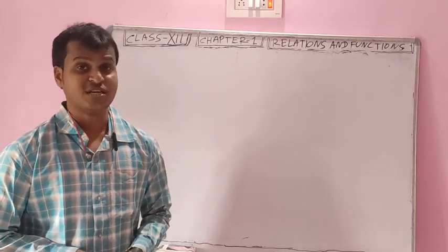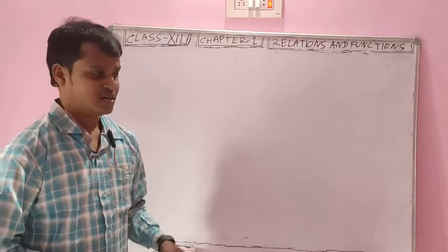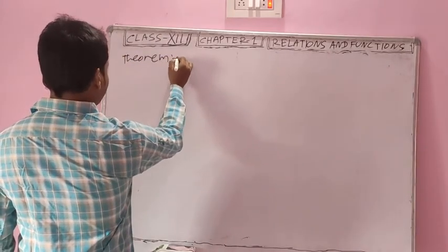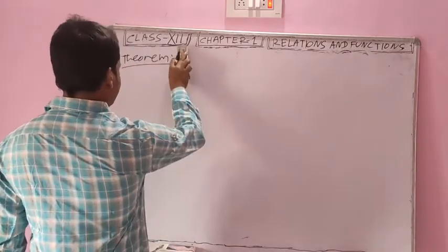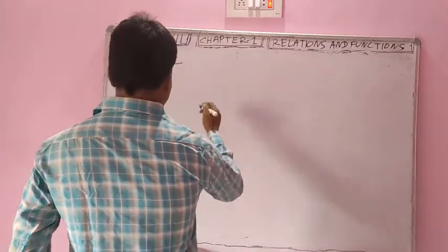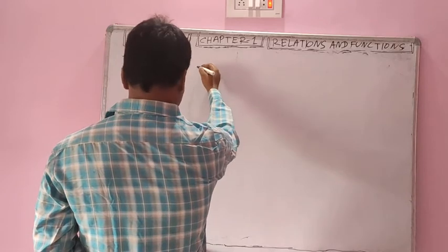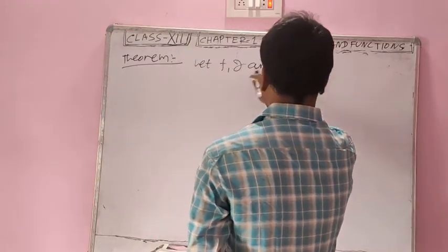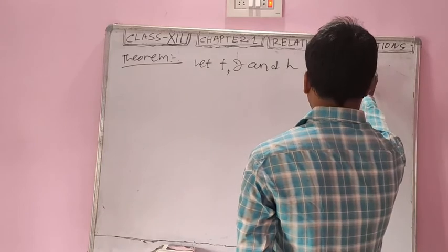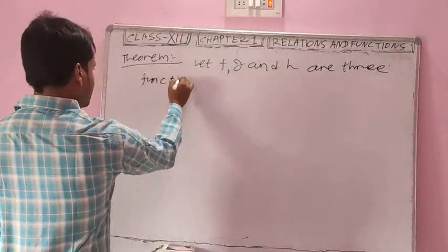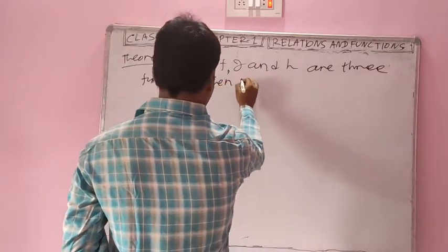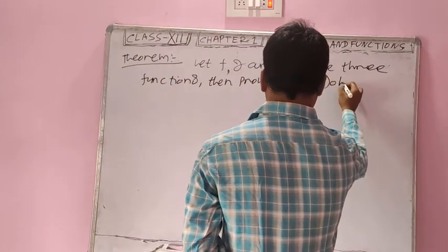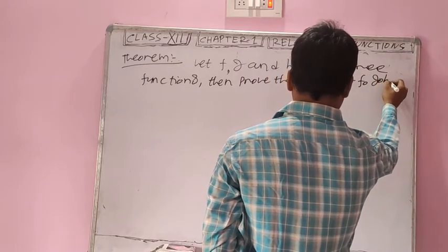Now come to the property of associative property. We are going to check and prove that the composition function satisfies the associative property. Let f, g, and h be three functions. Then we have to prove that f composition g composition h is equal to f composition g composition h.